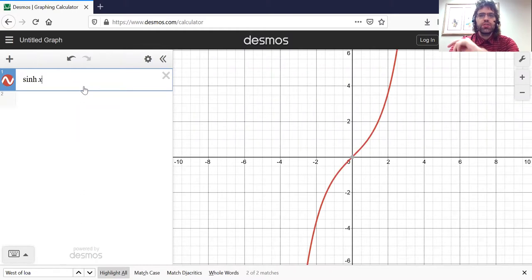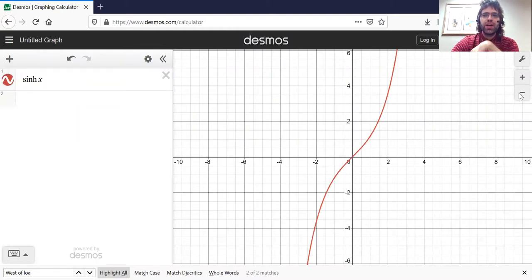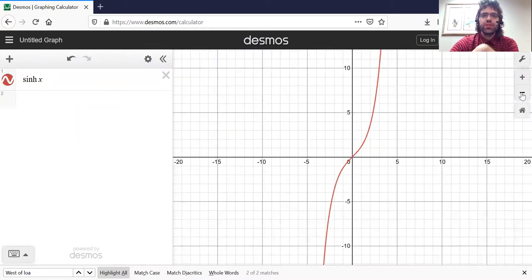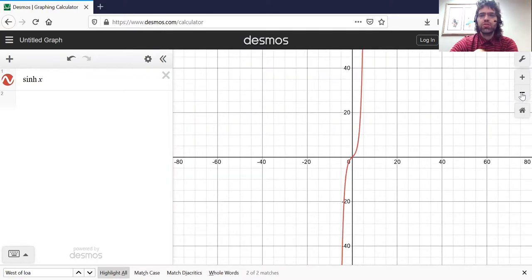Here is the hyperbolic sine. Certainly looks nothing like the sine. Looks kind of polynomial at first glance.